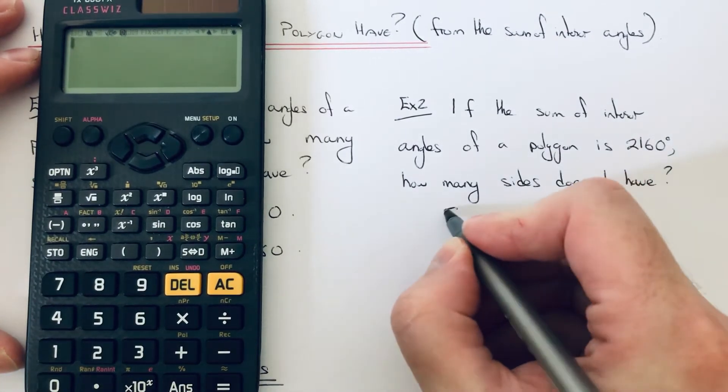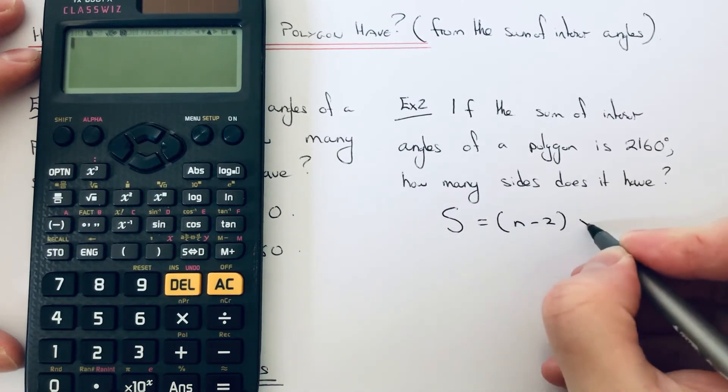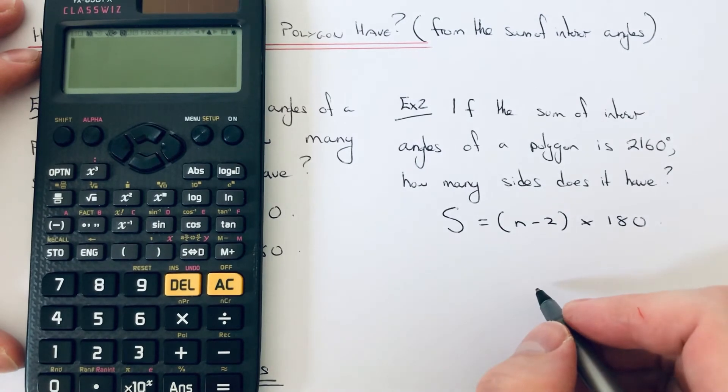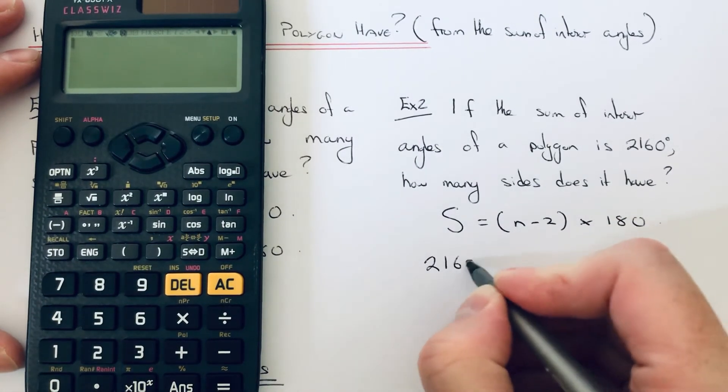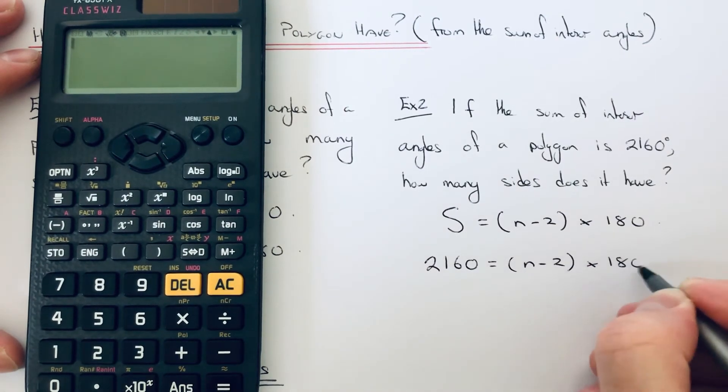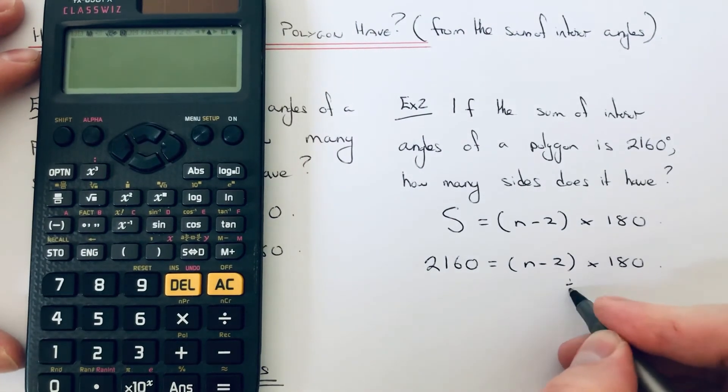Again, let's use our formula for the sum of interior angles. This time we need to make it equal to 2160. So first, divide both sides by 180.